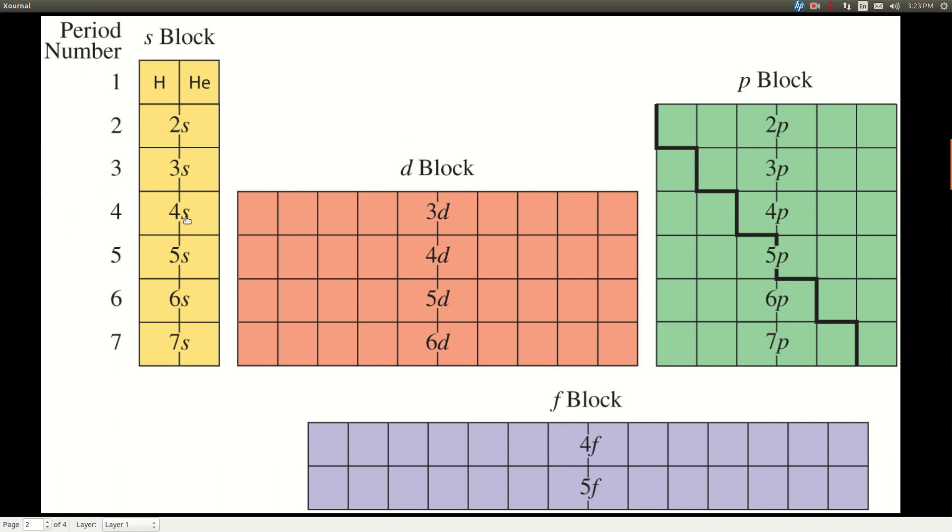remember we came down to 4S, and only after we filled the 4S could we put 3D. Now, this is the D block, and notice that for the S block and the P block, the row, the period number is the same as the sub level,